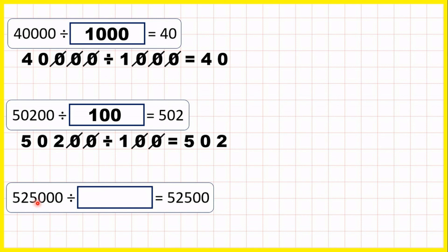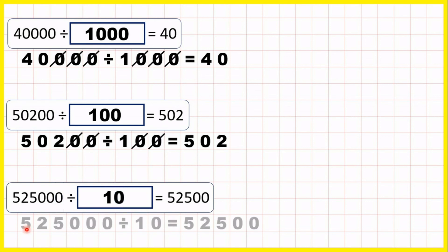Now 525,000 divided by what is 52,500? Looking at 525,000, the first five digits are the same as our answer and then there is just one more zero on the end. To cancel that one zero we divide by 10. We can only cancel one end zero because there is only one zero in 10, giving us 52,500 divided by 1, which is 52,500. So the missing number is 10.